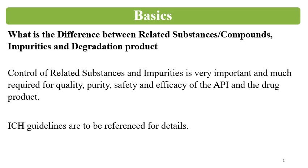Control of related substances, impurities, and degradation products is very important and is required for regulatory submission and approval. These impurities — whether related substances, degradation products, or impurities — have an impact on the quality, purity standards, safety, and efficacy of the API and the formulation. ICH guidelines, USP monographs, EP monographs, and other pharmacopoeial monographs provide limits for these impurities. ICH guidelines are generally referenced for providing and understanding these limits in detail.